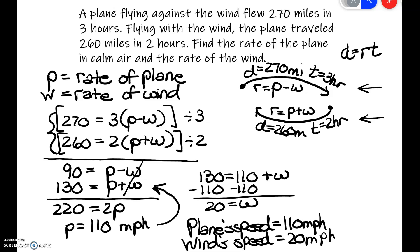The wind's speed equals 20 miles per hour. That's how you set up a problem where a plane is flying and wind is blowing. If you're flying against the wind, you subtract the rate of the wind. If you're flying with the wind, you add the rate of the wind.